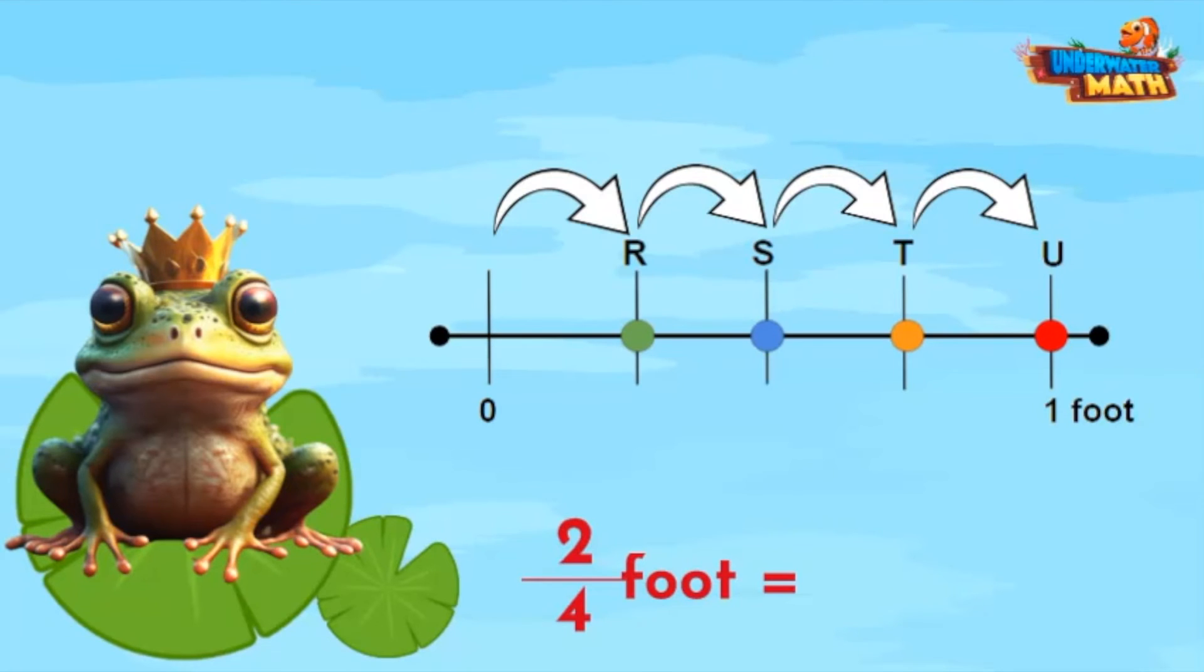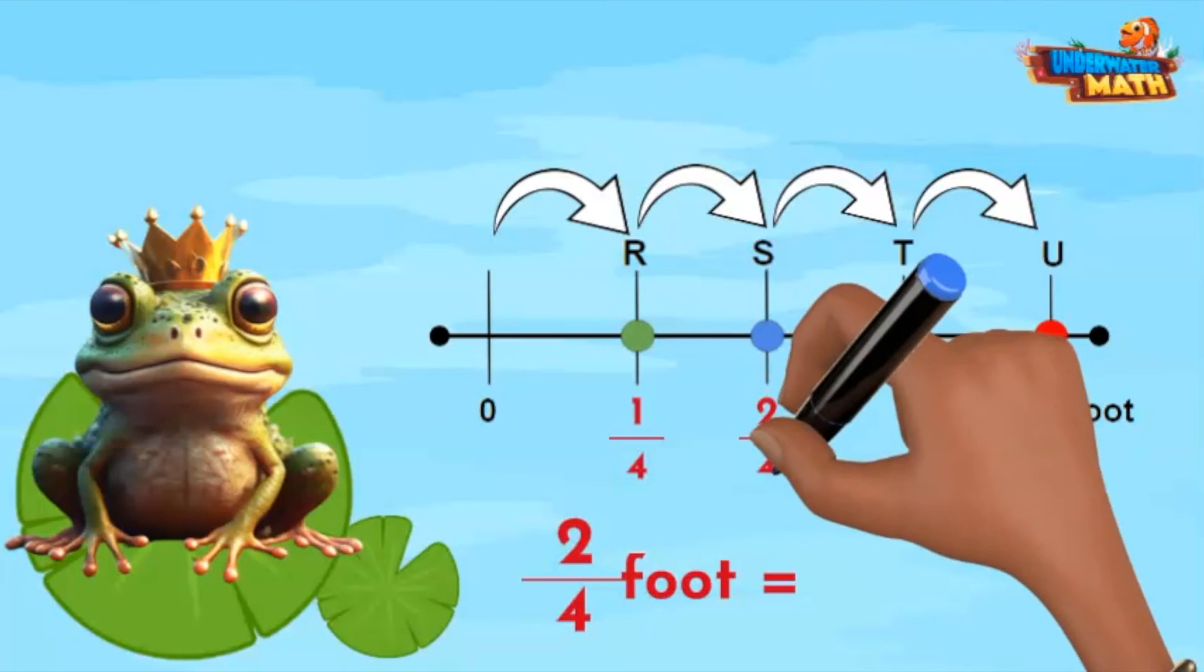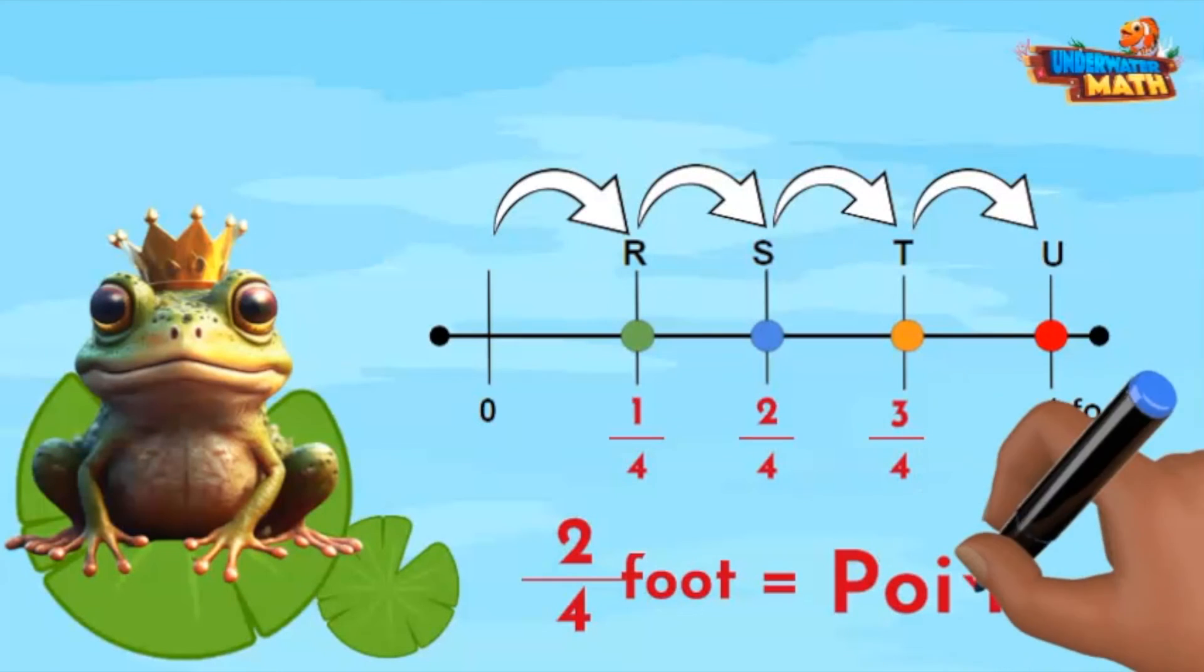Let's label the blank hash marks. One fourth, two fourths, and three fourths. It looks like point S represents two fourths foot.